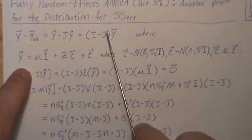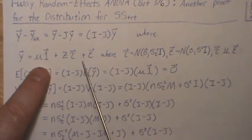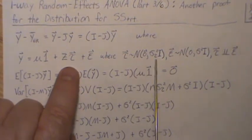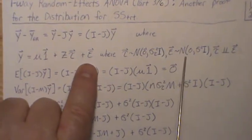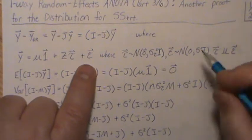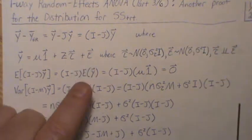Now Y, the model we're looking at in the one-way random effects is mu1 + Z tau plus epsilon, where tau is normally distributed with mean zero, variance-covariance matrix sigma tau squared I. Epsilon is normally distributed with mean zero, sigma squared I. The tau's and the epsilons are independent.